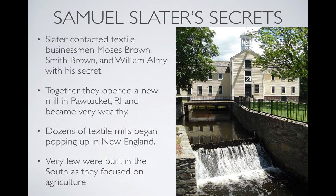When Slater reached the United States, he contacted a textile businessman named Moses Brown. Moses Brown had two business partners — his son Smith Brown and his son-in-law William Almey. Samuel Slater agreed to sell them his secret if they would take him into business. Together, the four of them opened a mill that still exists as a museum in Pawtucket, Rhode Island, and they became extremely wealthy in the textile business.